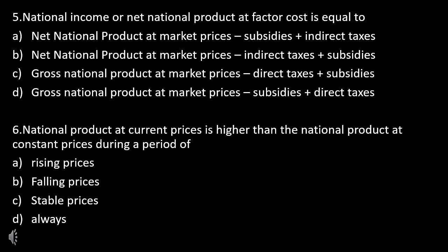Question 5: National income or NNP at factor cost is equal to — NNP at market price minus subsidies plus indirect taxes, NNP at market price minus indirect taxes plus subsidies, GNP at market price minus direct taxes plus subsidies, or Gross National Product at market prices minus subsidies plus direct taxes?